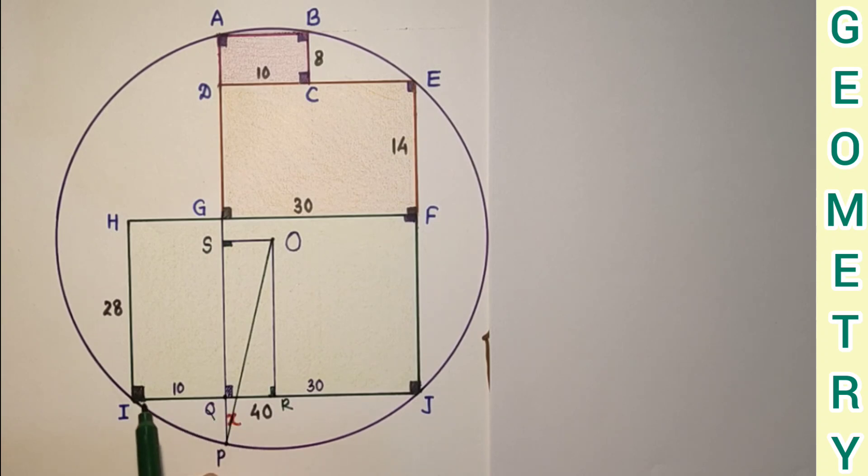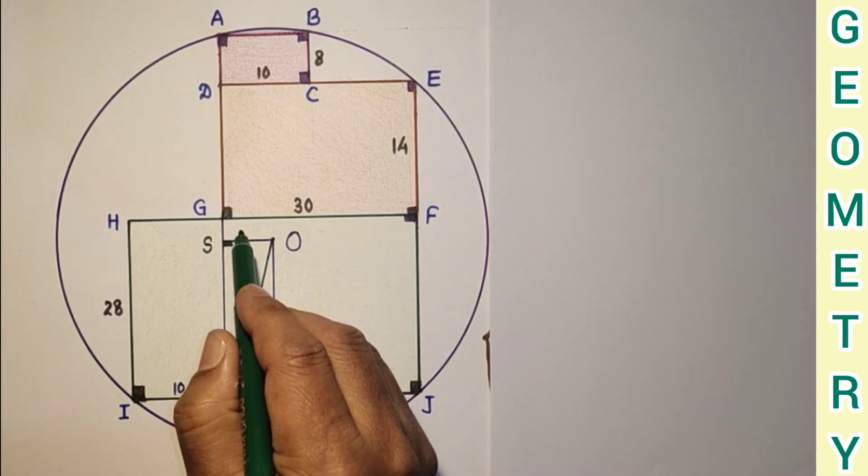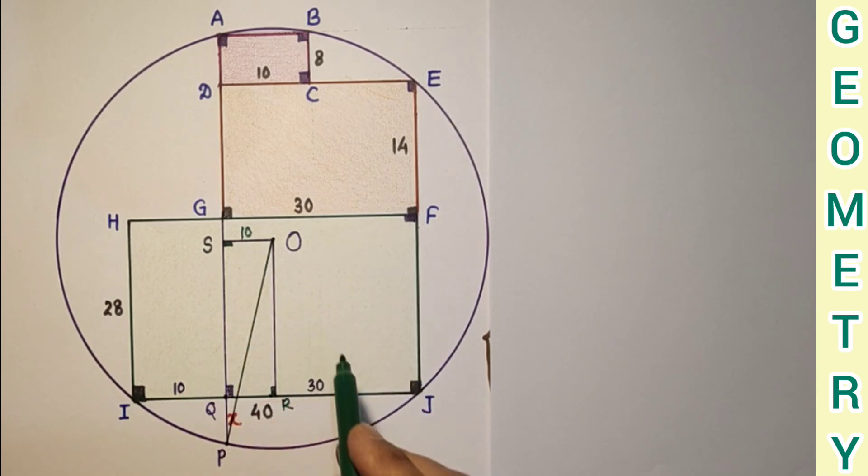And from I to R, since this is half of IJ, IR is 20. IQ is 10, so therefore QR is equal to 10. So this will also be 10. This diagram is not drawn to scale, so this is 10, this is 10.